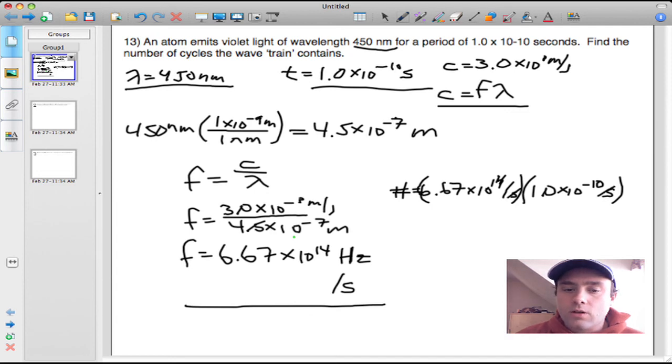You're left with 6.67 times 10 to the 14th times 1 times 10 to the minus 10. If you do that calculation correctly, you get 66,600 times.